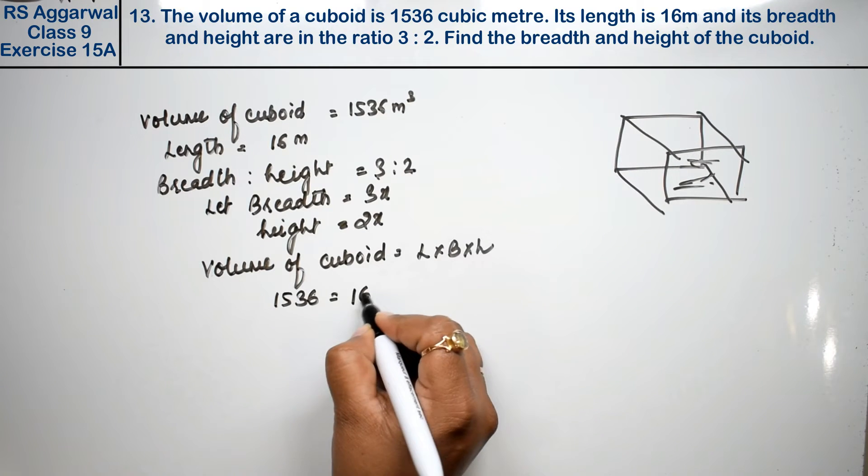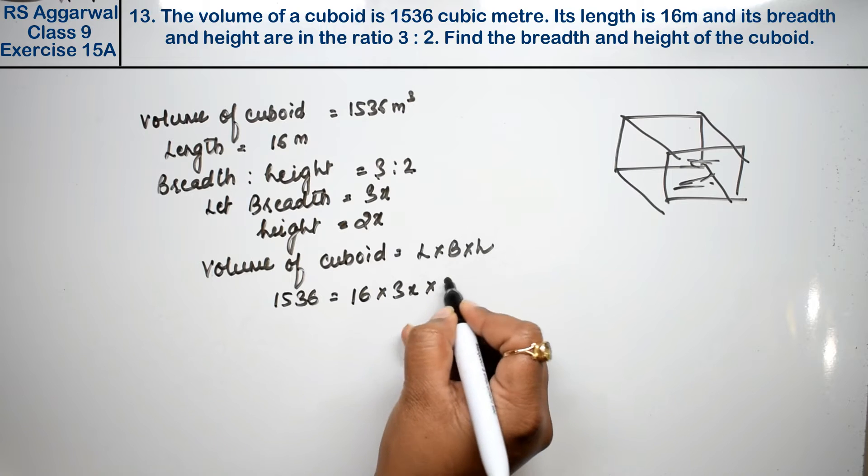So volume can be put 1536. Length is 16 meters, and breadth is 3x, and height is 2x.